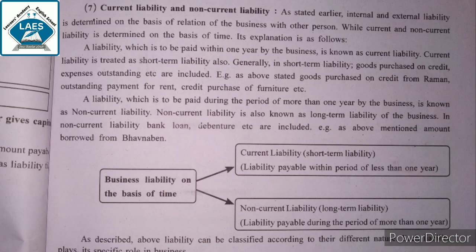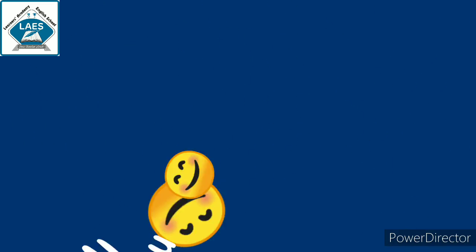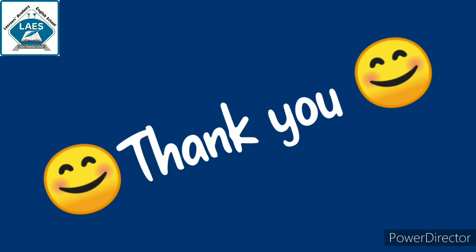Business liability on the basis of time: current liability is short-term liability; non-current liability is long-term liability. As described, the above liability can be classified according to their different nature. Each liability plays its specific role in the business. Thank you.